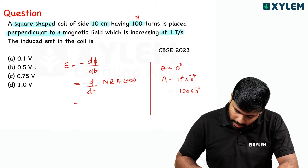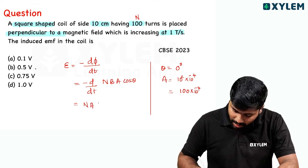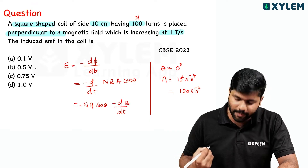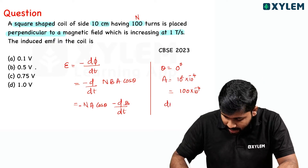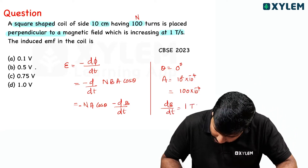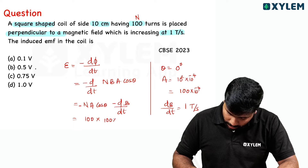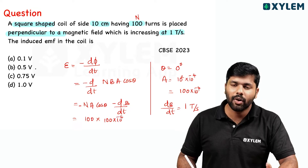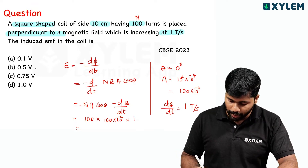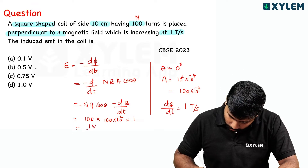Now substituting: d/dt, with N, A, and cosθ all constant, we differentiate only B. So EMF equals minus N times A times cosθ times dB/dt. That gives 100 into 10 raised to minus 4 into cos0° into 1. So 100 times 10 raised to minus 4: the 10⁴ and 10⁻⁴ cancel, giving 1 volt.